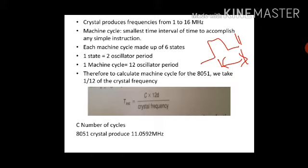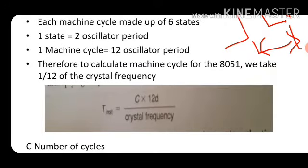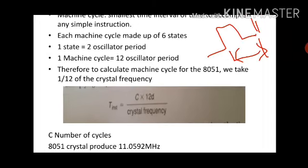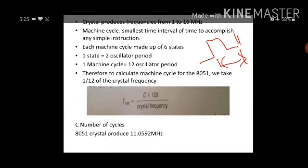How to calculate machine cycle? We take 1/12th of the crystal frequency. For any instruction, it will consume some machine cycles. If I want to calculate the time period to execute a particular instruction, by using the equation: T_instruction = C × 12 divided by crystal frequency. The crystal frequency will vary between 1 to 16 MHz, and C is the number of cycles.